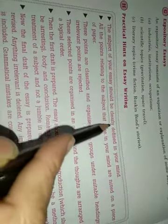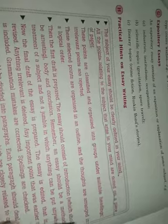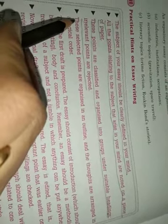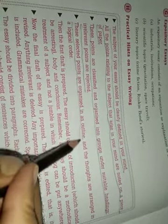Now, practical hints on essay writing. All the points relating to the subject that arise in your mind are noted on a piece of paper. These points are classified and organized into groups under suitable headings. Irrelevant points are rejected — whatever is not related to the topic is removed — and only the relevant points are expressed coherently. These selected points are organized in an outline and the thoughts are arranged in a logical order.